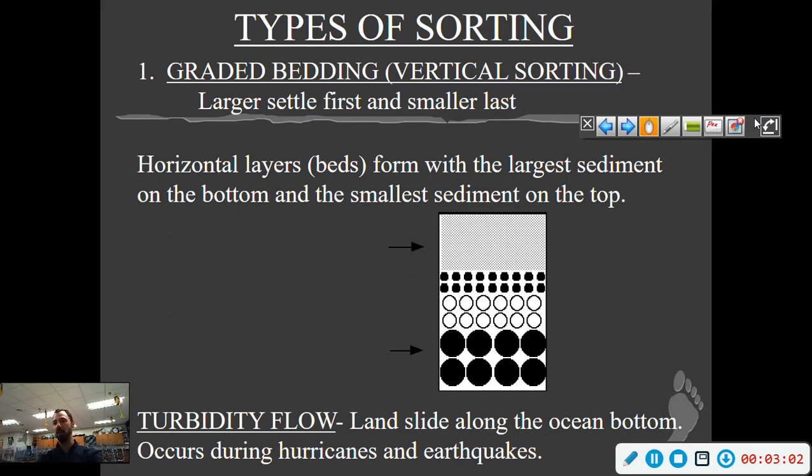One common place for this to happen is something called a turbidity flow—a landslide along the ocean bottom. During earthquakes, hurricanes, or storms, sometimes the water gets disturbed and causes an underwater avalanche. We found out about these when they severed connections with Europe; our telephone signal got cut. Basically, it's an underwater avalanche of sediment. Large is on the bottom, medium in the middle, and small at the top, always in that order.